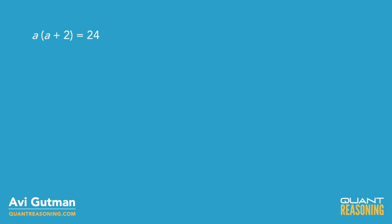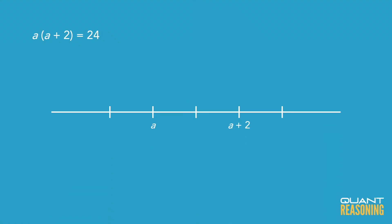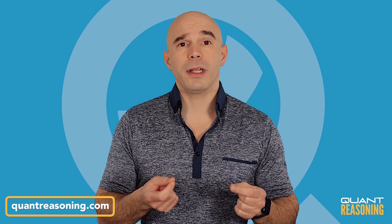What do we have here? They're telling us that if you multiply a times a plus 2, you get 24. So if you're used to number line reasoning, you would immediately visualize a and a plus 2 as two numbers on the number line. A is on the left, and a plus 2 would be two units to the right of A. Now they're telling us that the product of these two numbers is 24. So can I think of two numbers on the number line that are two away from each other whose product is 24?